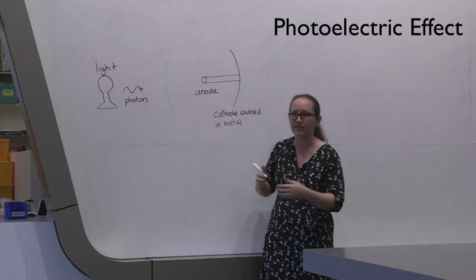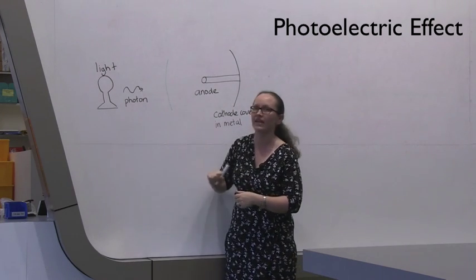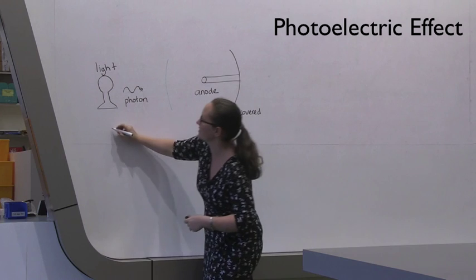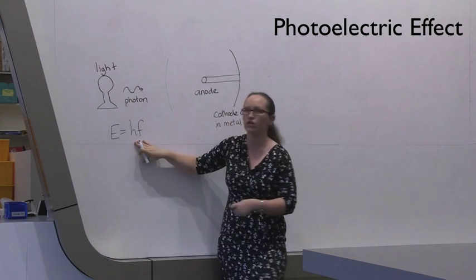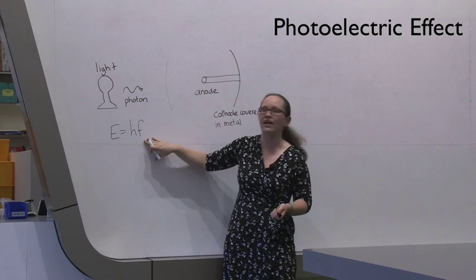So the theory you need to know to understand this is, first of all, the energy that the photon has is given by E is equal to HF, where H is Planck's constant, and F is the frequency.